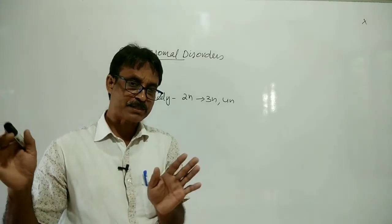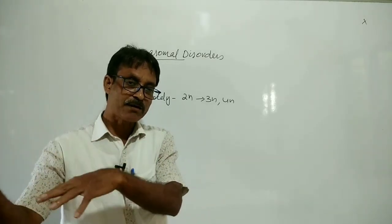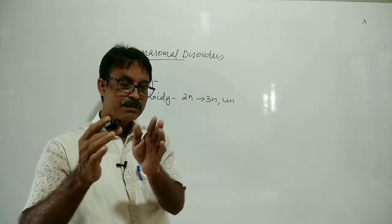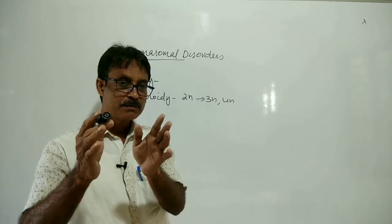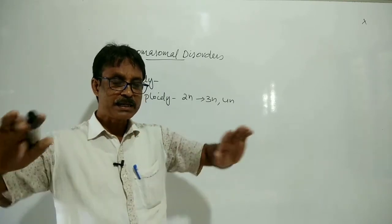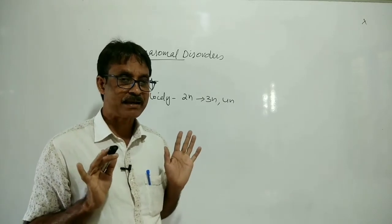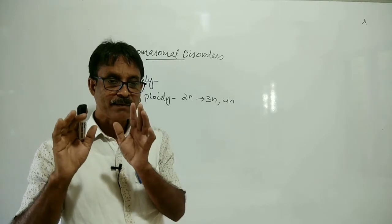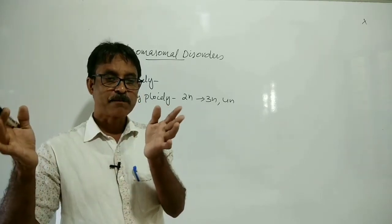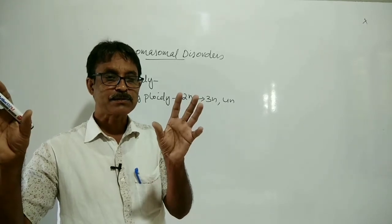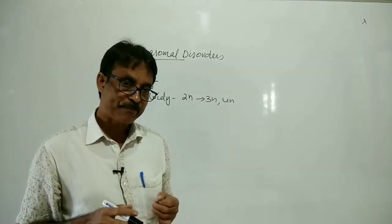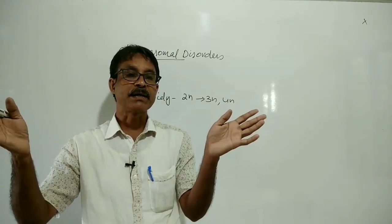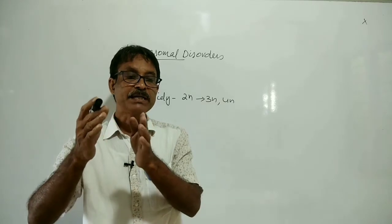Cytokinesis is the division of cytoplasm. Telophase is the last stage of cell division in which the chromosome number becomes double and the chromosomes are going into two poles of the cell. After telophase, the cell undergoes cytokinesis to form two cells.